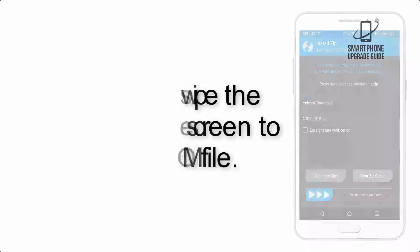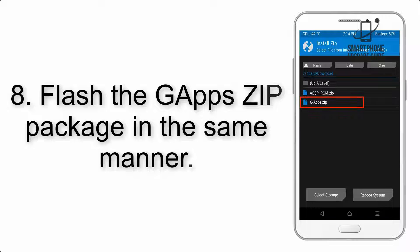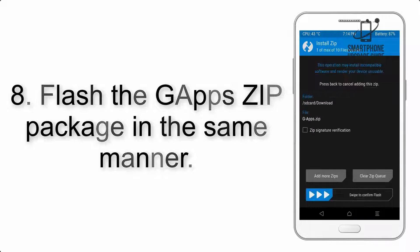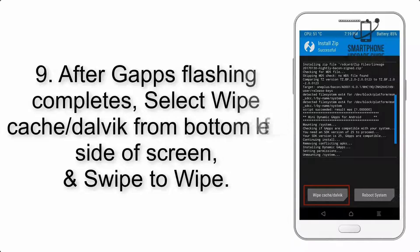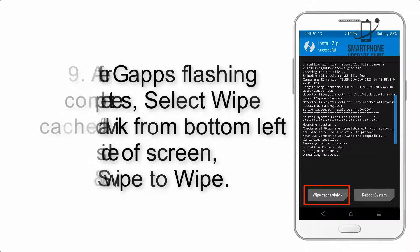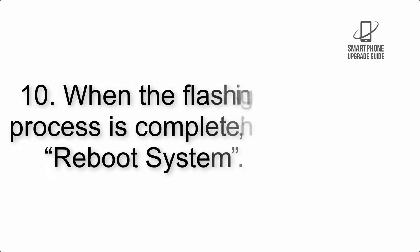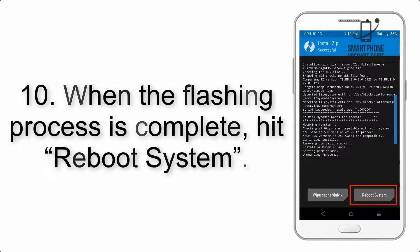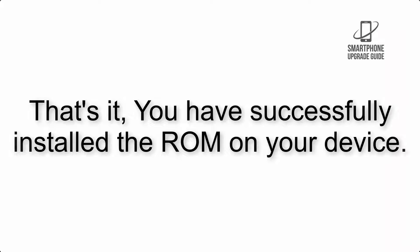Step 8: Flash the GApps zip package in the same manner. Step 9: After GApps flashing completes, select Wipe Cache and Dalvik from the bottom left side of the screen and swipe to wipe. Step 10: When the flashing process is complete, hit Reboot System. That's it — you have successfully installed the ROM on your device.